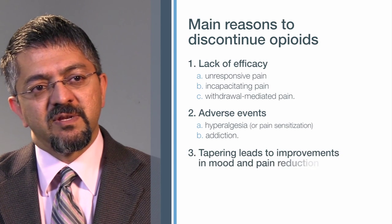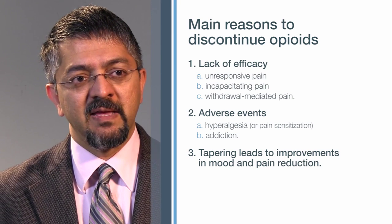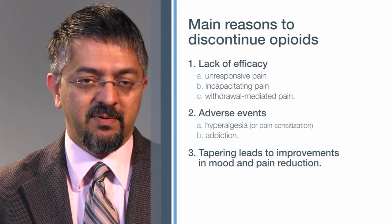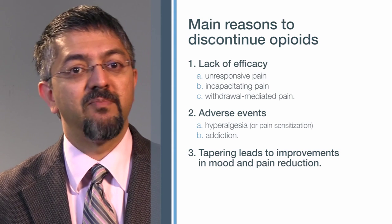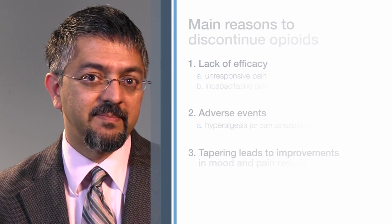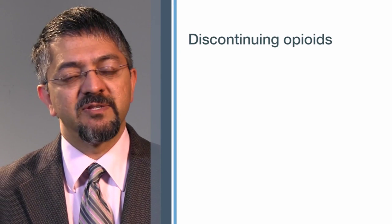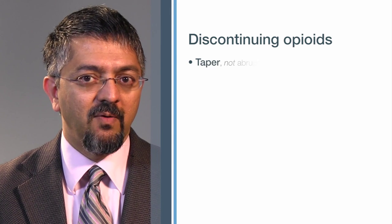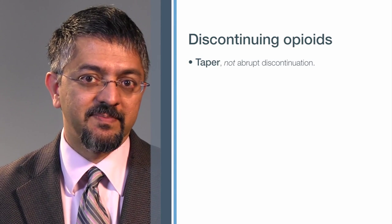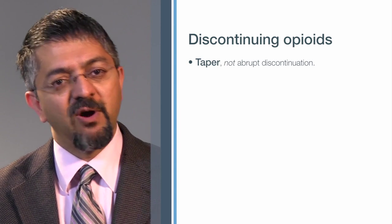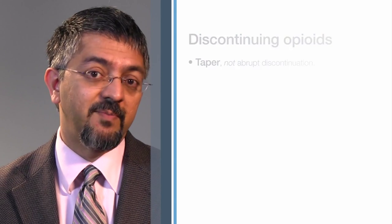The other reasons to discontinue opioids, and to make sure that you've got objective evidence that this has been the right path, is that when you taper, you start noticing that there's an improvement in the patient's function, in their mood, and in fact, even in their pain. What we recommend is a taper versus abrupt discontinuation, because opioid withdrawal can be characterized by pain, regardless of a history of a pain disorder.